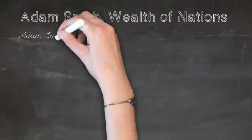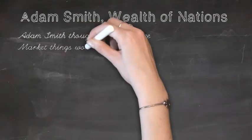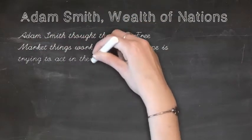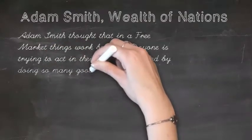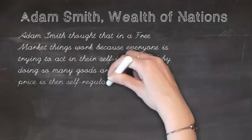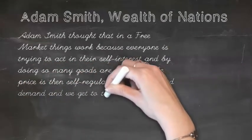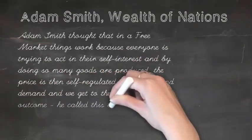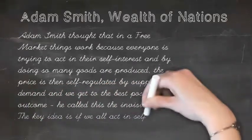Adam Smith thought that in a free market, things work because everyone is trying to act in their own self-interest. And by doing so, many goods are produced, the price is self-regulated by supply and demand, and we get to the best possible outcome. We call this the invisible hand.